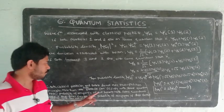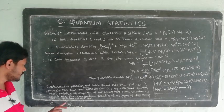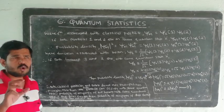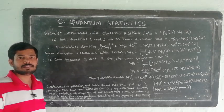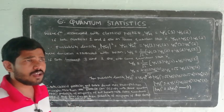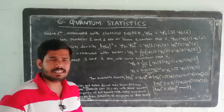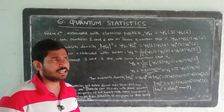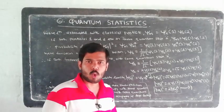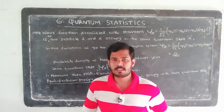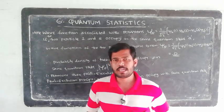The probability of occupancy of two bosons with the same quantum state is two times greater than the probability of occupancy of two classical particles with the same quantum state. Now let us check fermions. The wave function associated with fermions is: 1 by root 2 times [psi_a of 1 times psi_b of 2 minus psi_a of 2 times psi_b of 1].